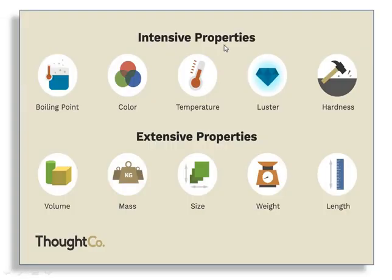There are some examples of intensive and extensive properties. Intensive properties include boiling point, color, temperature, and hardness — they remain the same throughout the system. Extensive properties include volume, mass, size, weight, and length. These extensive properties can change with the initial conditions.